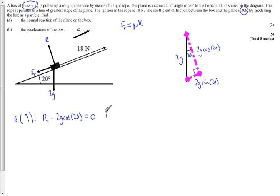If we do the second equation, resolving in the direction of motion makes our life easier. We're going to use Newton's second law, which is total force or resultant force equals mass times acceleration. The total force is 18 acting up the plane. Against the plane we've got friction and also 2g sin(20).